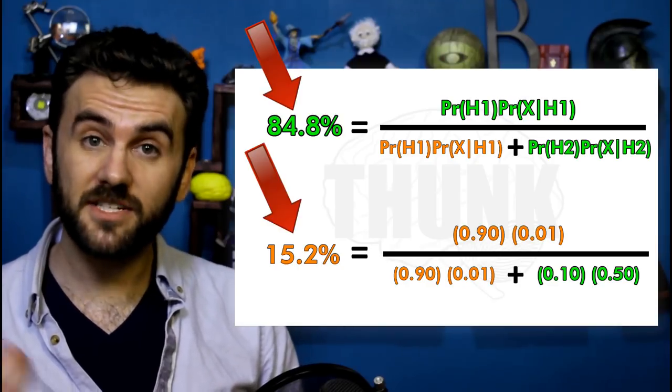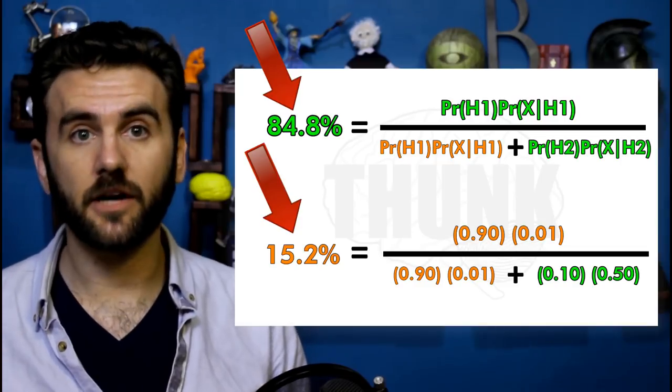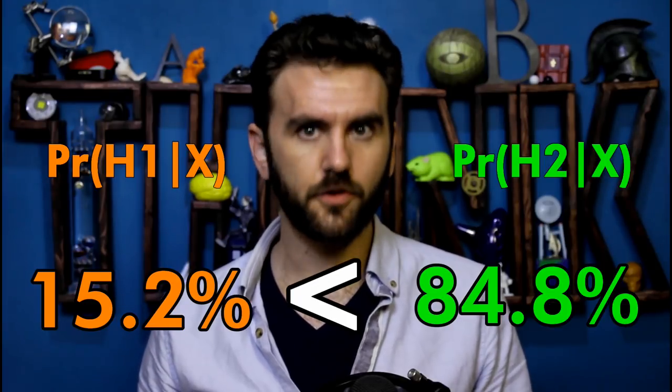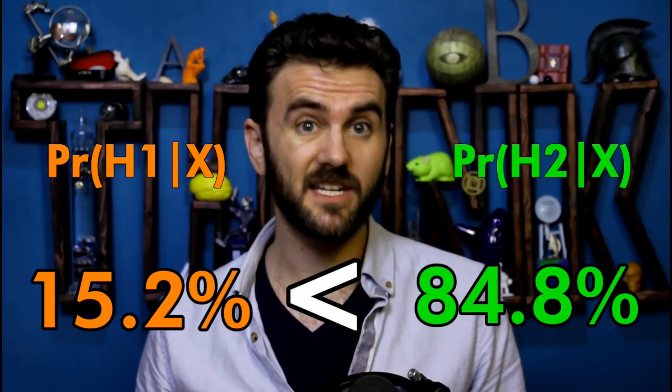These are called posterior probabilities, because they're what you get after the calculation. As we were discussing before the non-nerds left, on the surface an outsider would just see that we've decided not to go back to the restaurant, like we were absolutely certain that it's crap now. But the truth is that we just think it's more likely it's hit upon hard times than that our burnt-to-a-crisp pizza was an honest mistake. Of course, you probably don't need to use math to make these sorts of decisions and update your beliefs, but if you're a nerd, like I am — why the hell not?